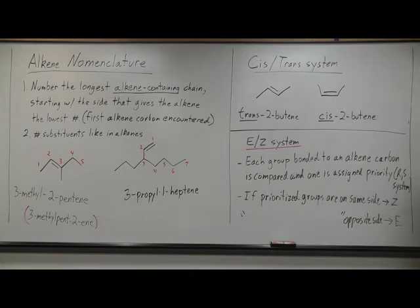Each bond, each group bonded to an alkene carbon is compared and then one is assigned a priority. These priorities are assigned just like we assigned them with the R and S system. If those prioritized groups are on the same side, then it's Z. If the prioritized groups are on the opposite side, then it's E.